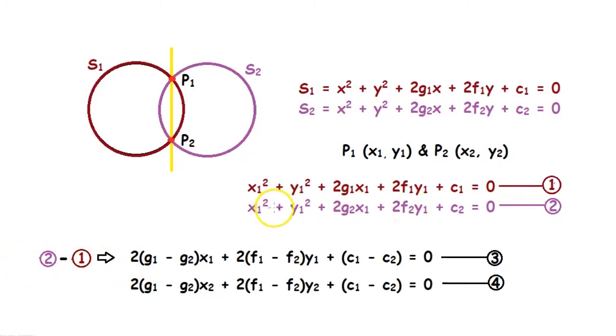x₁² and y₁² cancel off and we get 2(g₁ - g₂)x₁ + 2(f₁ - f₂)y₁ + (c₁ - c₂) = 0.